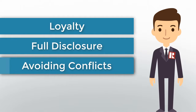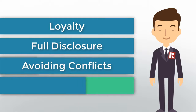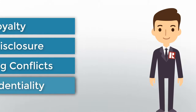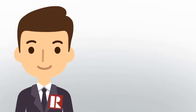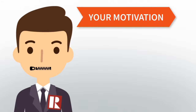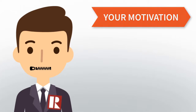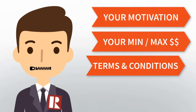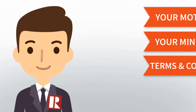Your agent must tell you everything they know that might influence your decision in a transaction. Avoiding conflicts of interest: your agent must avoid any situations that would affect their duty to act in your best interests. Confidentiality: your agent must not reveal your private information without your permission, even after your relationship ends — that includes your reasons for buying or selling and your minimum or maximum price.